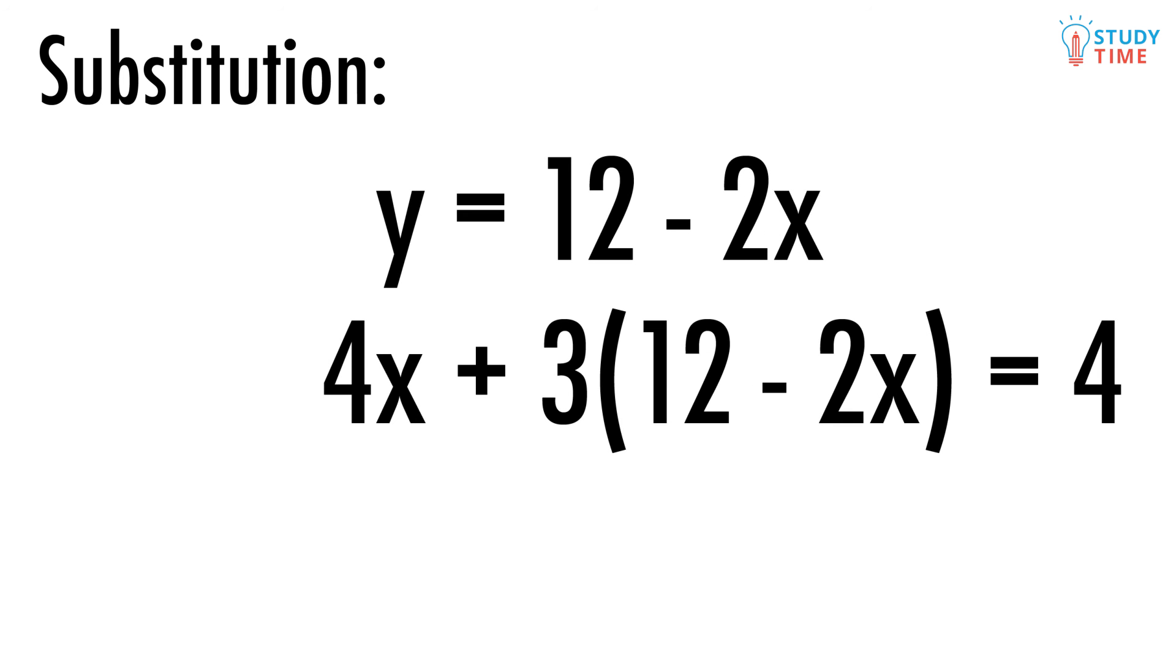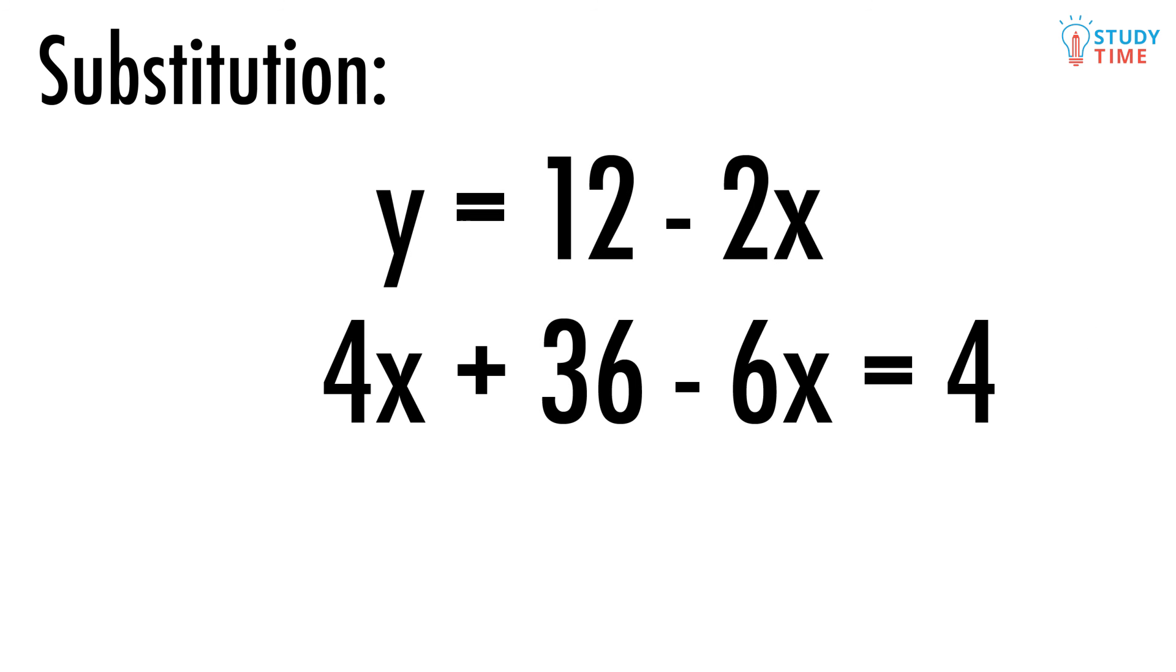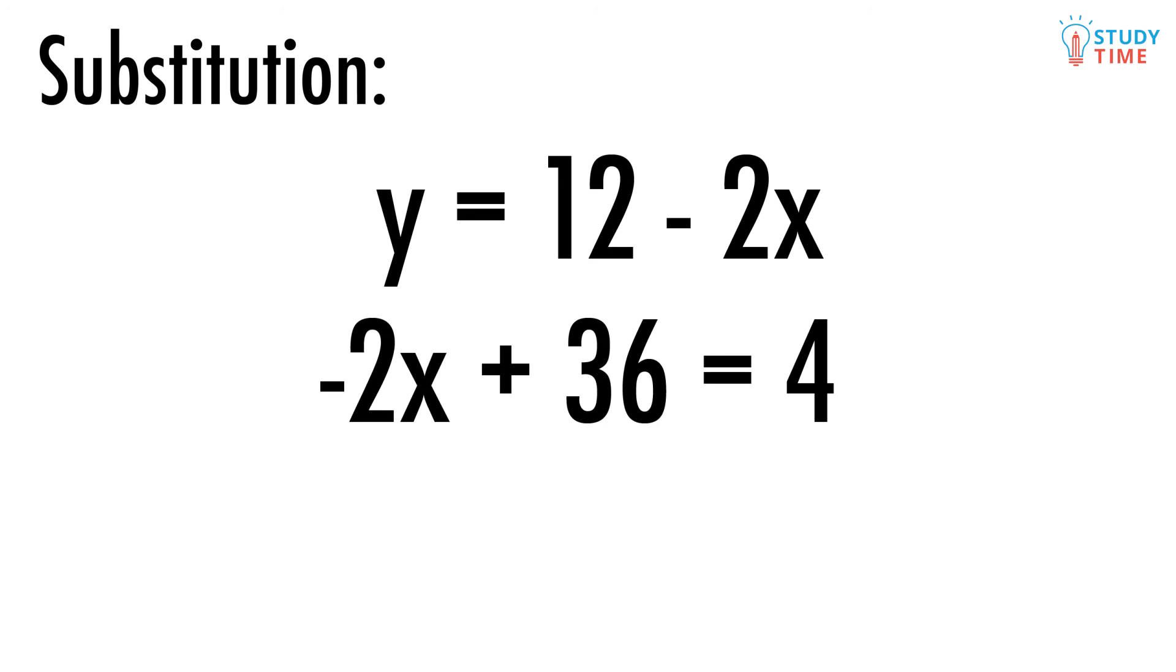Now we can plug this solution for y into the second equation. That way we just have x's: 4x plus 3 times (12 minus 2x) equals 4. We'll need to expand that bracket first by multiplying everything inside of it by that 3. Now we've got 4x plus 36 minus 6x equals 4. We'll just tidy things up a bit here by putting those x's together, giving negative 2x plus 36 equals 4.